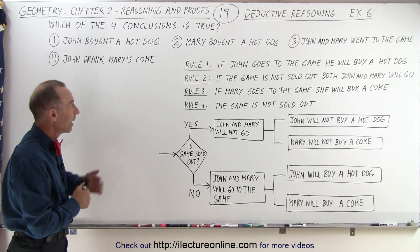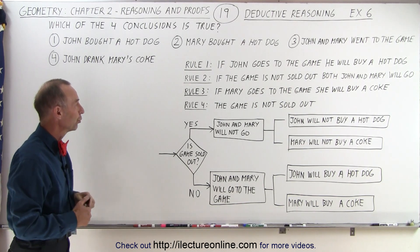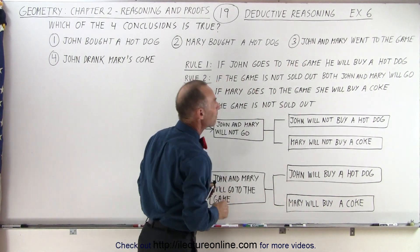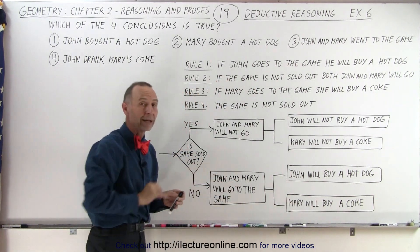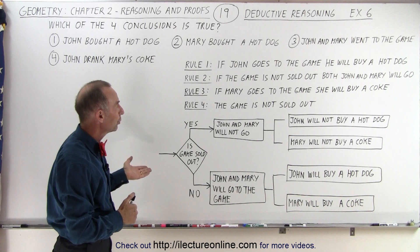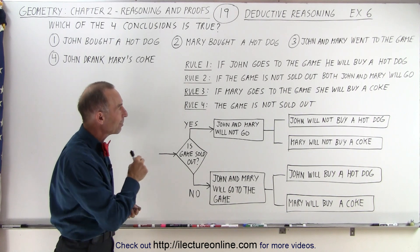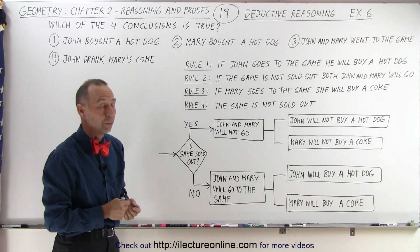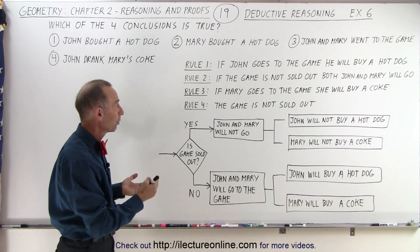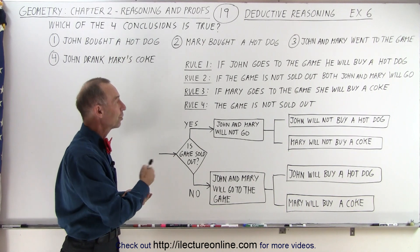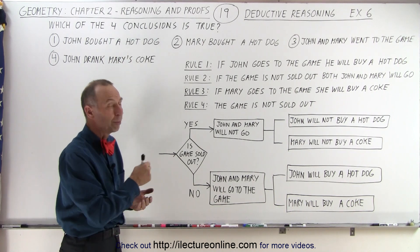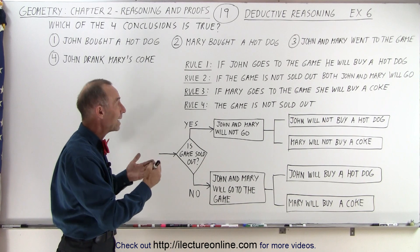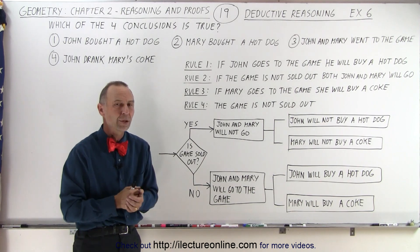We have to base that on these four rules. Rule number one: if John goes to the game, he will buy a hot dog. Rule number two: if the game is not sold out, both John and Mary will go. Rule number three: if Mary goes to the game, she will buy a Coke. And rule number four: the game is not sold out.